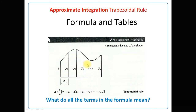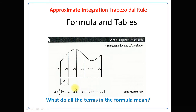Now, for the general case with n trapezoids: the area A of the shape is given by h/2 × [y₁ + y₀ + 2(y₂ + y₃ + ... + yₙ₋₁)]. In this formula, y₀, y₁, y₂, ... yₙ are the function values obtained by putting the subinterval x-values into the function. The first and last results are not multiplied by 2, while the sum of the intermediate results is multiplied by 2.